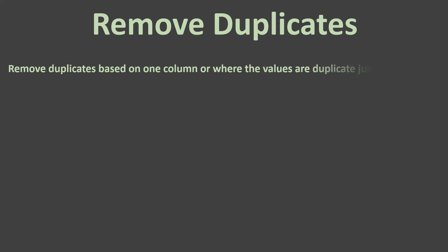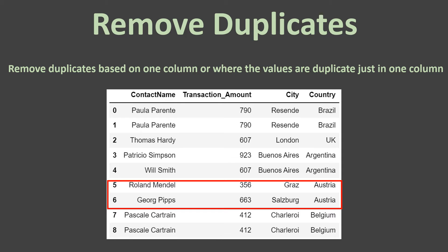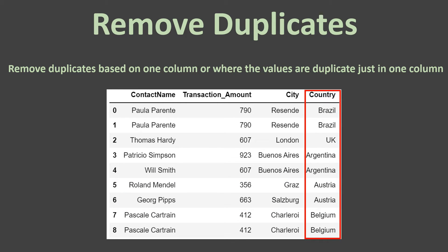The second condition is where you would like to remove duplicates based on one column — where values are duplicate in just one column. Here, if you look at the country column, you can see duplicates, but all other values are unique. So if you want to remove duplicates based only on the country column, many rows have duplicate values there while the rest of the columns do not.